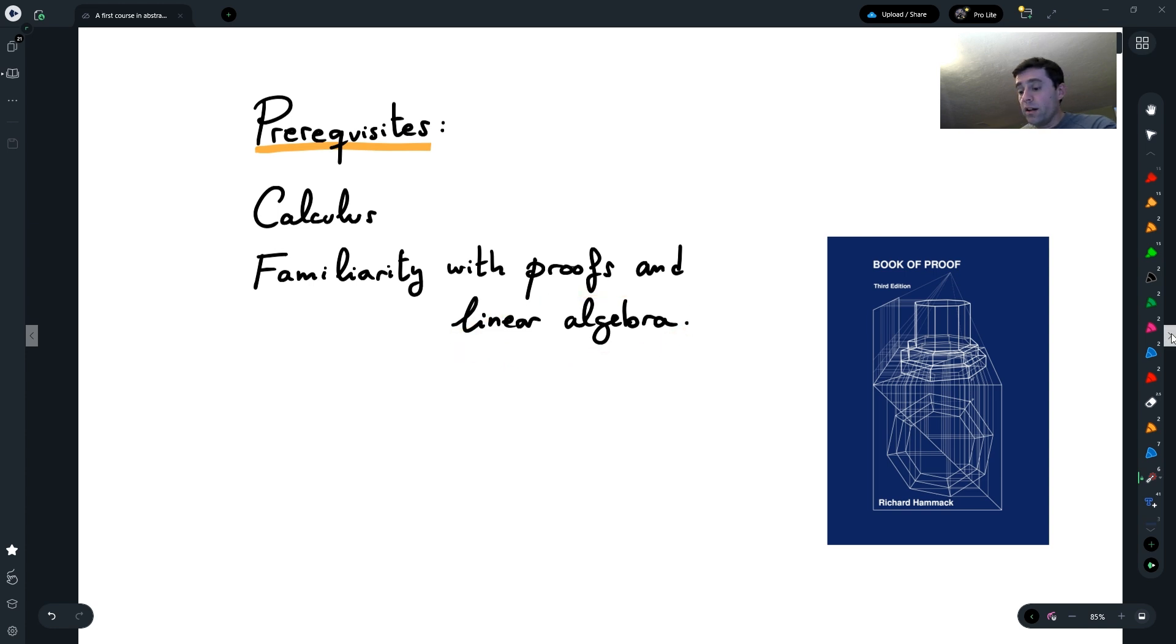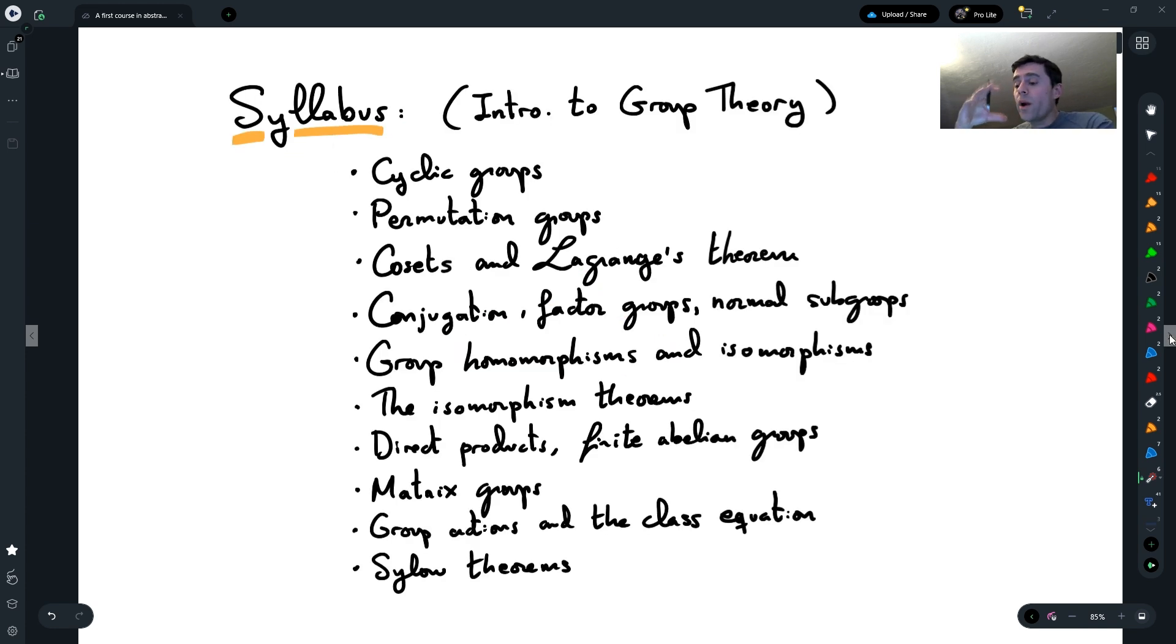The syllabus. What are we going to cover in this class? As I said, it's mostly an introduction to group theory with some applications of algebra and group theory to real life applications. We're going to start with a definition of groups, and then we're going to talk about basic examples of groups, for example, cyclic groups, permutation groups.